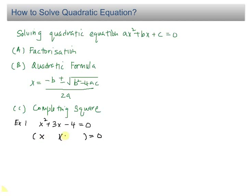So X times X gives X squared. I have 4 times 1. I need a positive 3X, so I have positive 4X minus X. Therefore, X minus 1 equals zero, giving X equals 1, or X plus 4 equals zero, giving X equals negative 4.